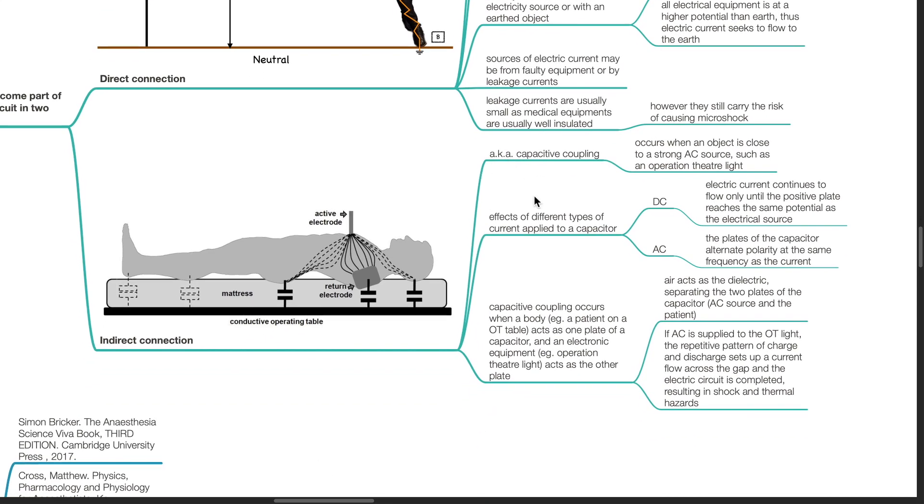Indirect connection, also known as capacitive coupling, occurs when an object is close to a strong AC source, such as an operation theater light. Effects of different types of current applied to a capacitor: for DC, electric current continues to flow only until the positive plate reaches the same potential as the electrical source. For AC, the plates of the capacitor alternate polarity at the same frequency as the current.